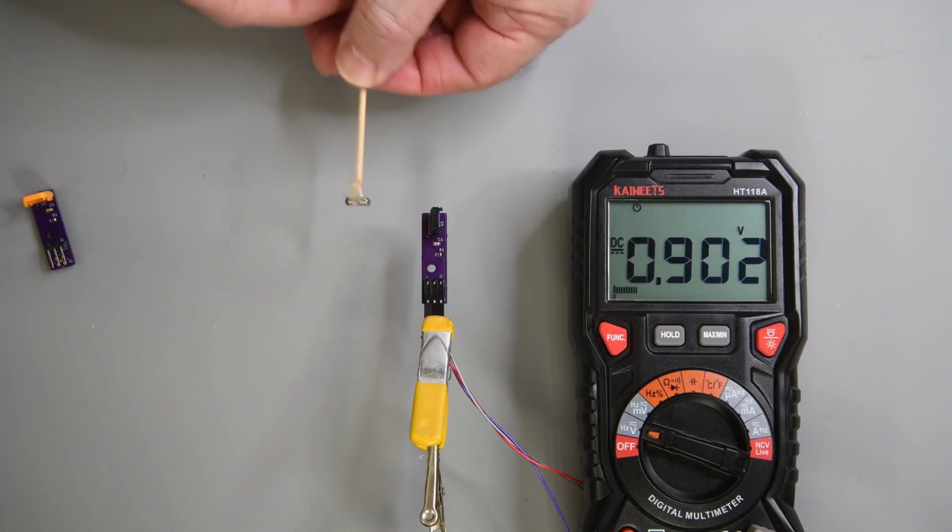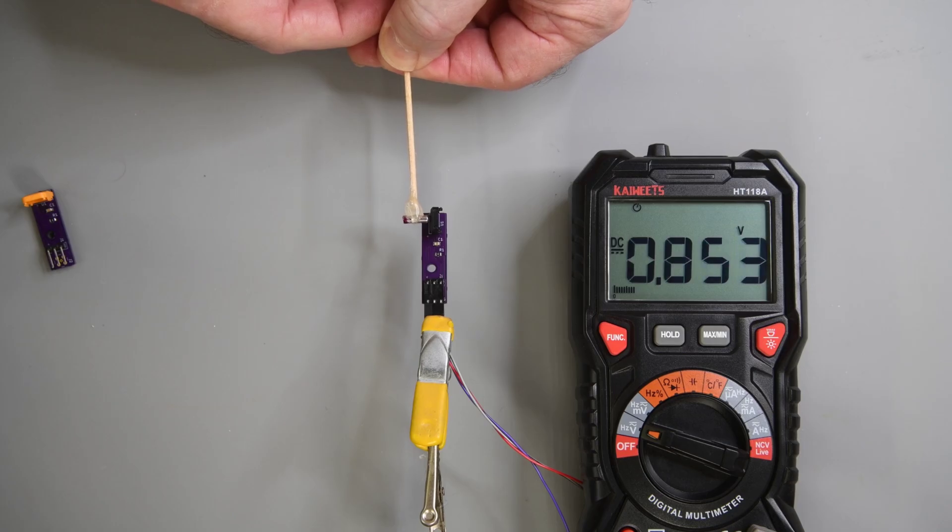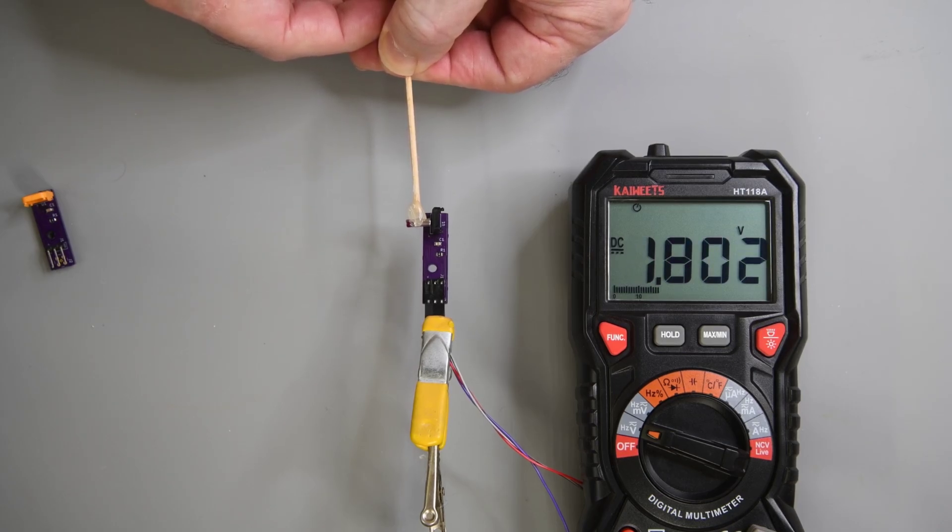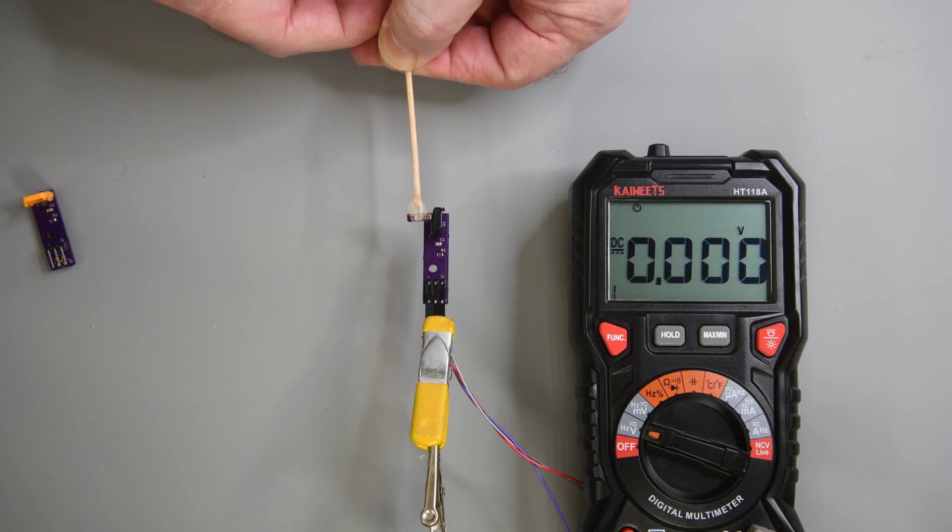Back at the TMR sensor you can see with the magnet south pole facing the sensor. I'm at 0 volts with the magnet at the top. And 1.8 volts with the magnet at the bottom.